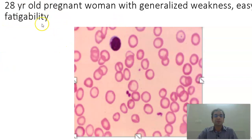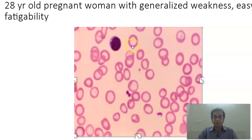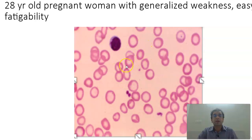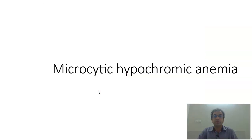Coming to hematology slides: a 28-year-old pregnant woman with generalized weakness and easy fatigability. For reference, the small lymphocyte is the ruler. You have to compare the RBC size with that of the small lymphocyte. You find the RBC is smaller than the small lymphocyte — it is microcytic. There is hypochromia because normal red blood cells should have one-third central pallor; here the central pallor is more than one-third. This is a microcytic hypochromic anemia.